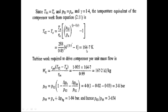This 165 Kelvin is the increase in air temperature across the compressor. The turbine work required to drive the compressor per unit mass flow is the mechanical efficiency times turbine work output. So the turbine work required is c_pa times (T_02 minus T_a) divided by mechanical efficiency, which equals 1.005 times 165 divided by 0.99, giving 167.2 kJ/kg.